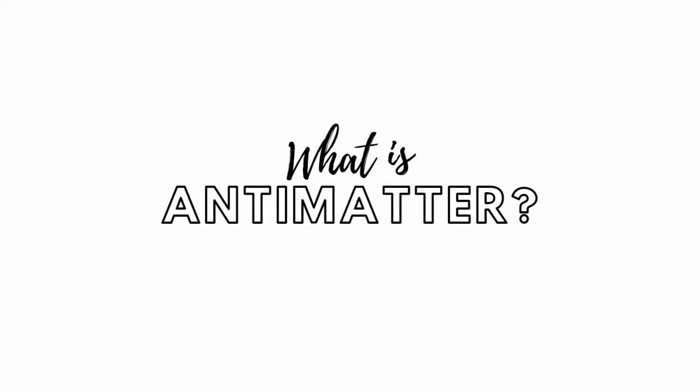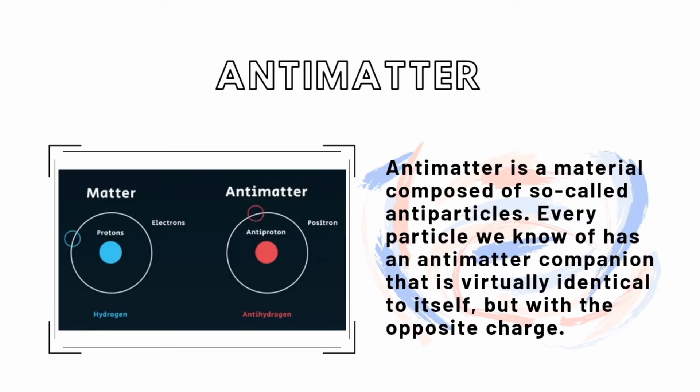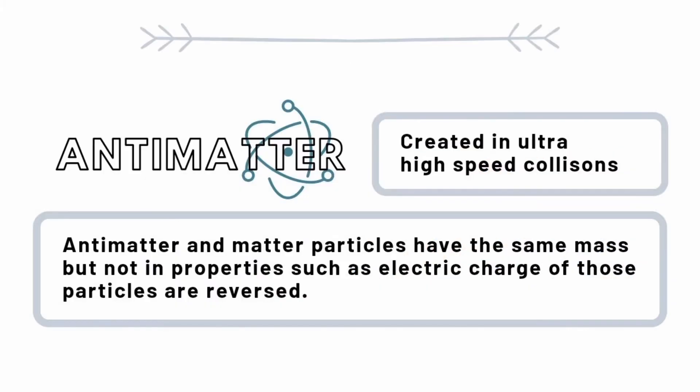What is antimatter? Antimatter is a material composed of so-called antiparticles. It is believed that every particle we know of has an antimatter companion that is virtually identical to itself, but with the opposite charge. Antimatter particles are created in ultra-high-speed collisions. Antimatter and matter particles have the same mass, but properties such as electric charge are reversed.